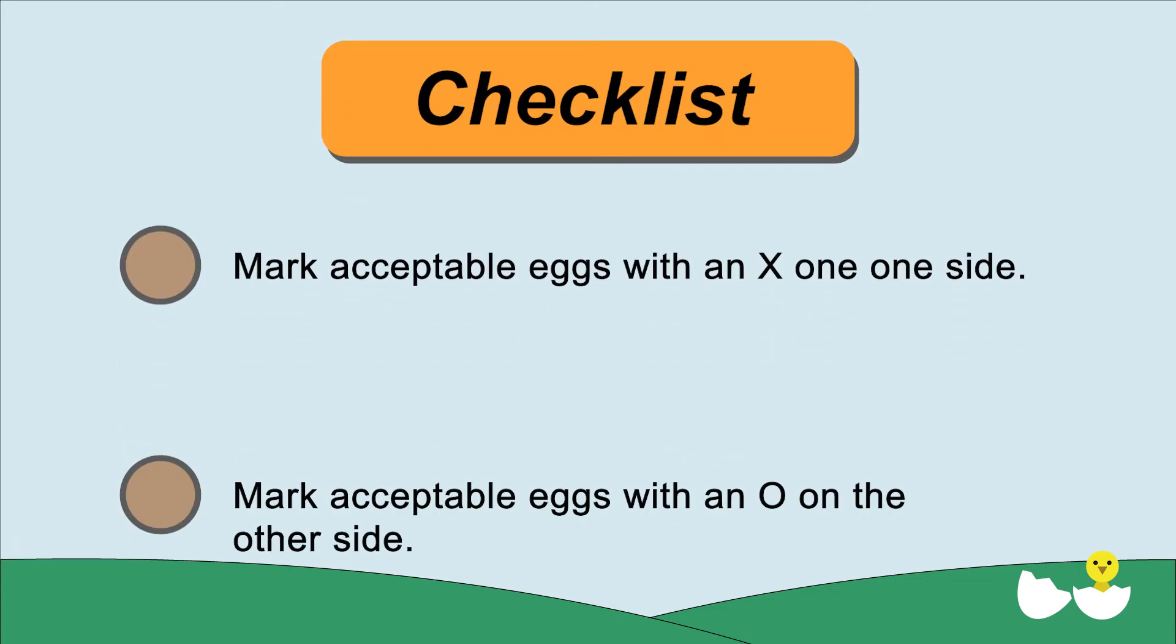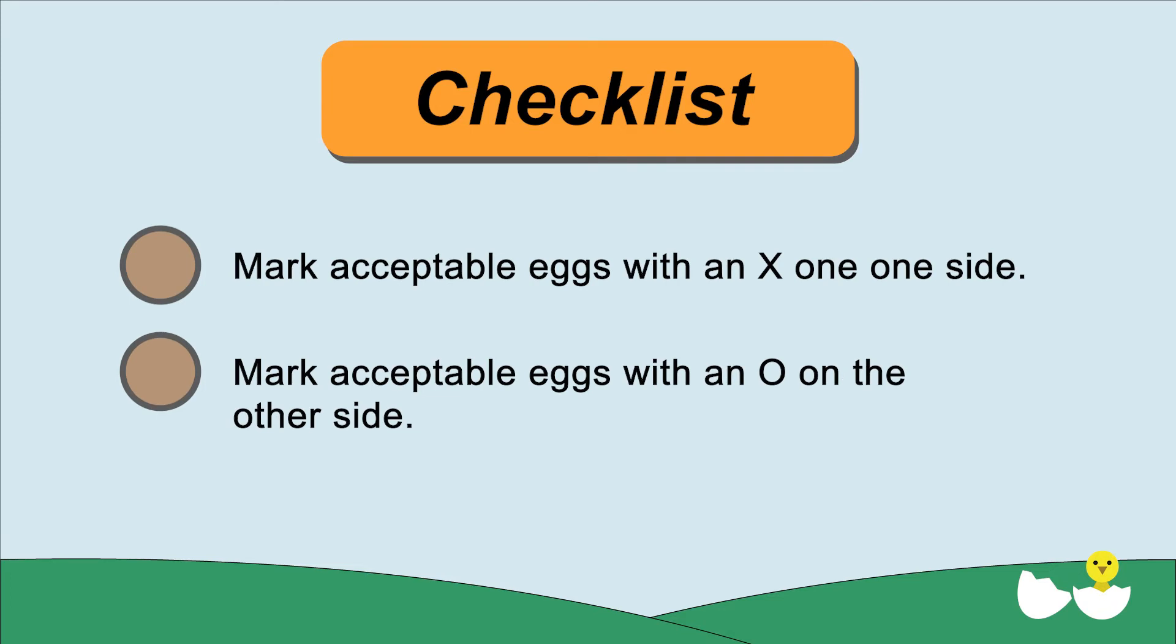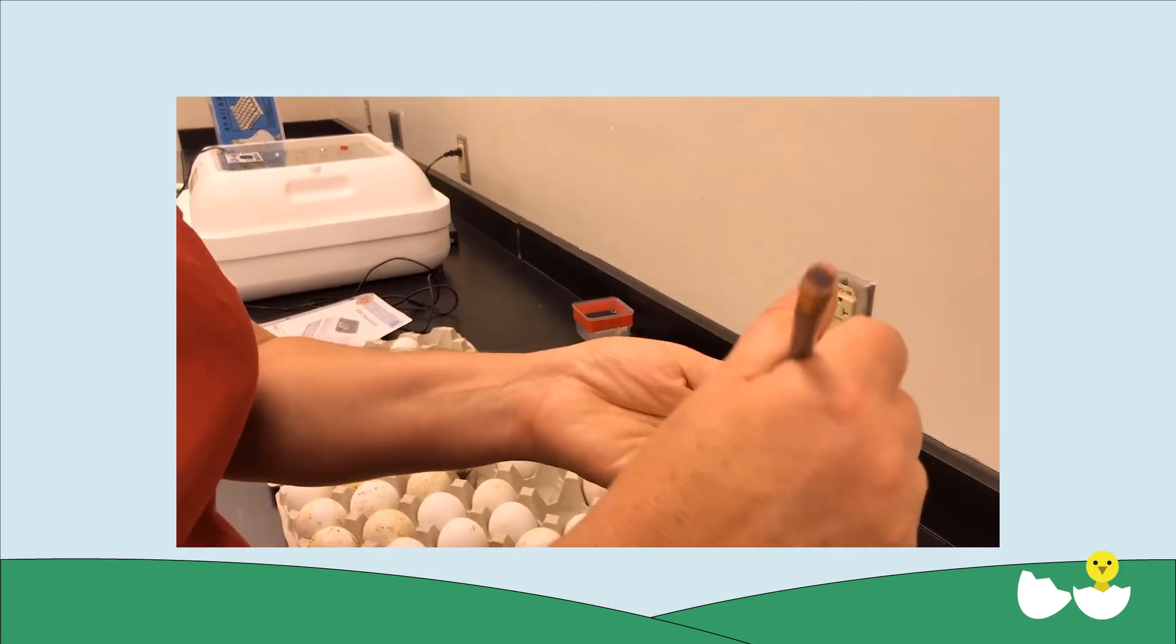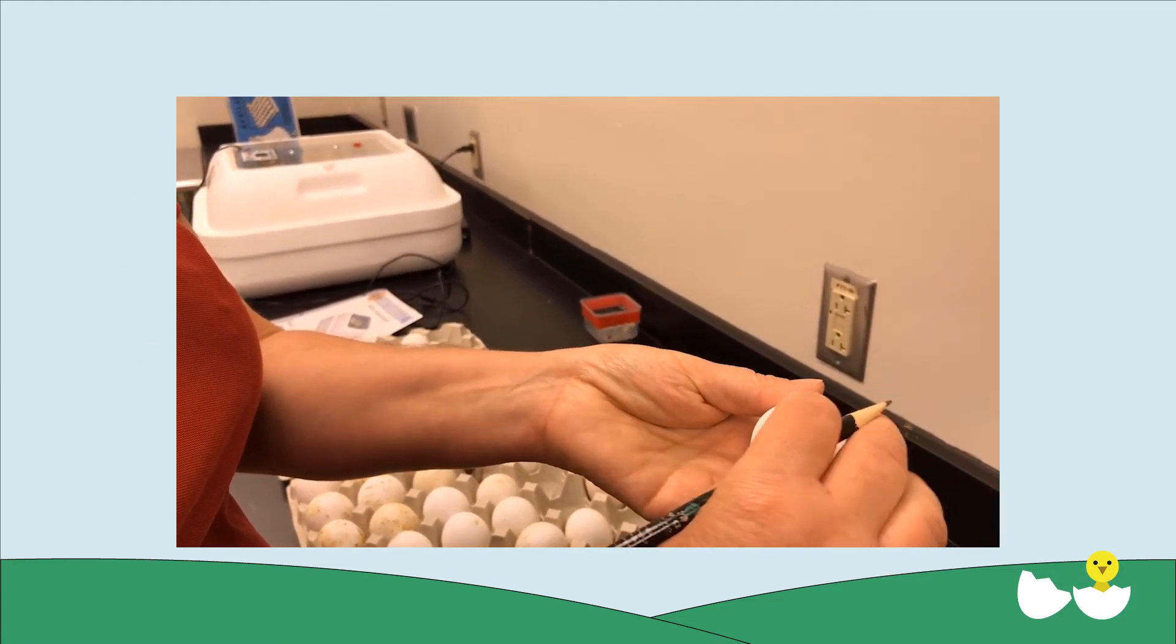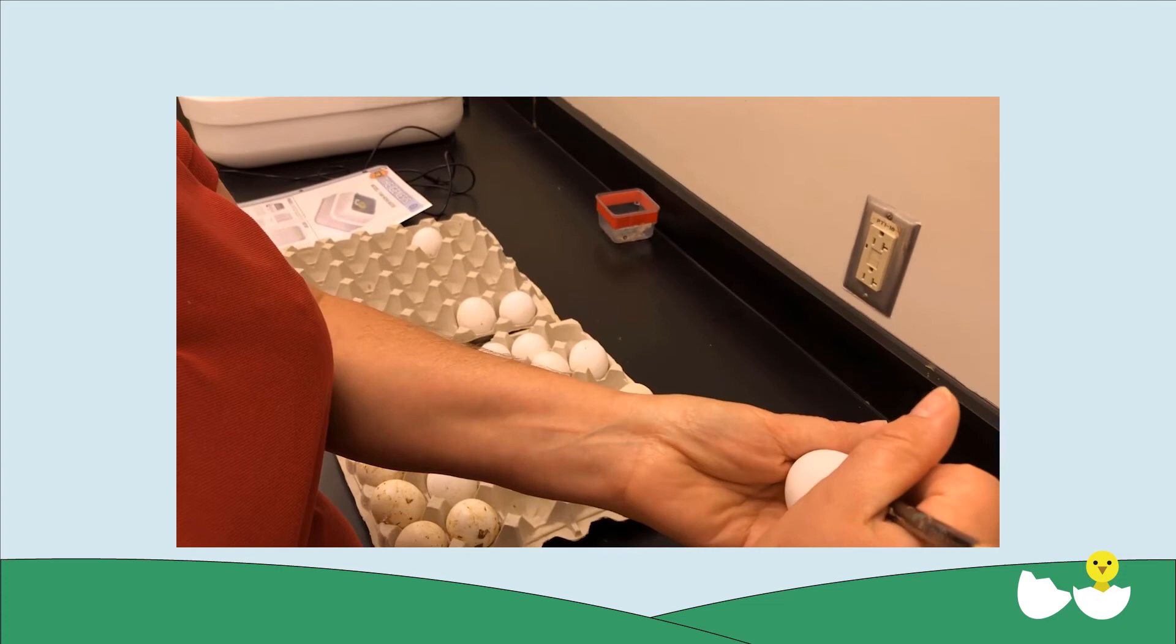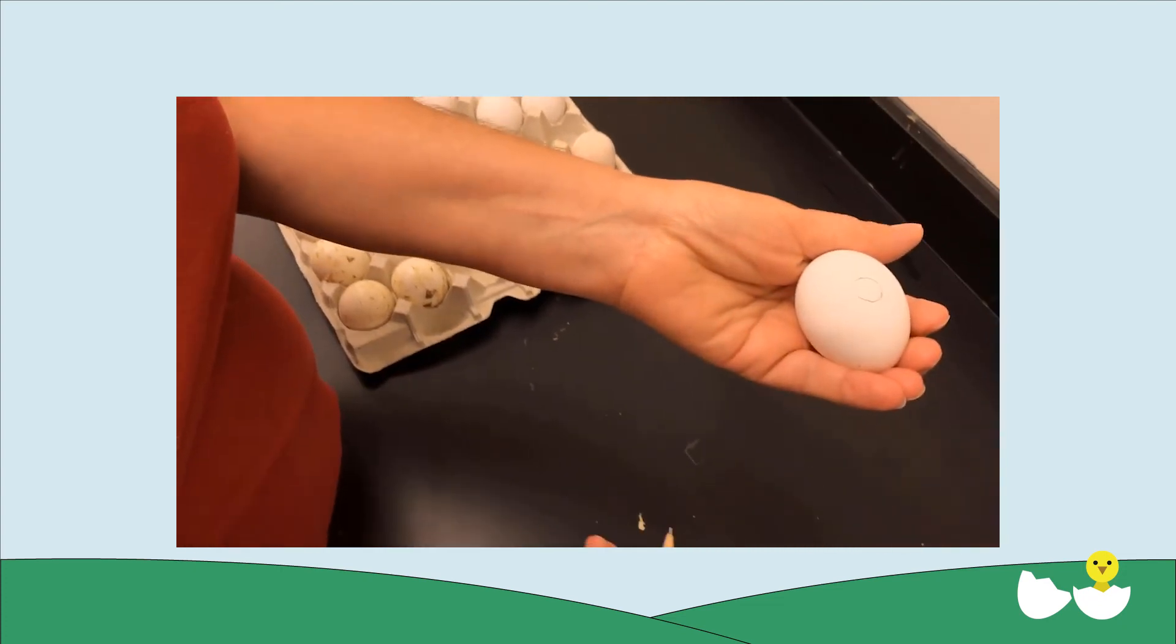Use a pencil to mark acceptable eggs with an X on one side and an O on the other. When working with youth, it is helpful to number the eggs in pencil as well so that each egg can be individually identified during the record keeping process.